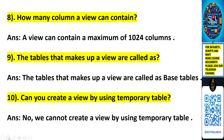The eighth question: how many columns can a view contain? A view can contain a maximum of 1024 columns. The ninth question: what are the tables that make up a view called? They are called base tables. The tenth question: can you create a view using temporary tables? The answer is no — we cannot create a view using a temporary table.